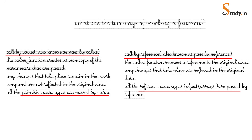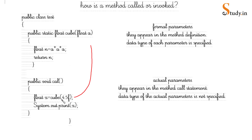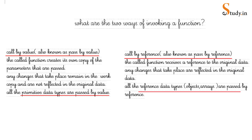In the earlier example where we passed 4.5f to variable a, this is call by value because we are passing a value. If you make any changes to a inside the method, it will not be reflected back — 4.5 will remain 4.5 in the calling code.